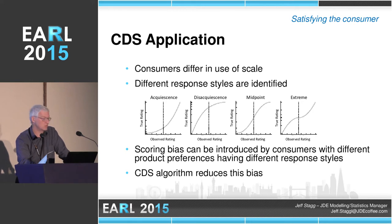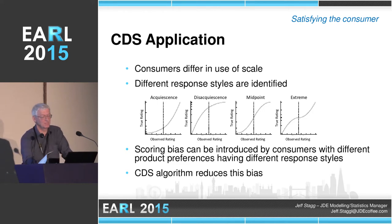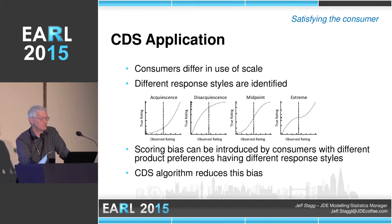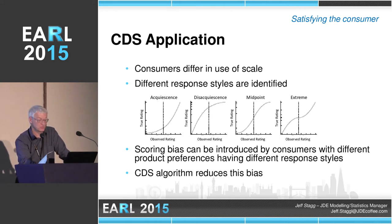Acquiescent are people that are very positive about all the products. Disacquiescent is the reverse. Midpoint is probably a person like me — a scientist who starts in the middle and then works either way. And then you get somebody extreme — I might guess they might be extrovert — a love it or hate it, Marmite type of thing. The interesting thing for us is that we know this exists. The scoring bias introduced by consumers with different preferences can have a consequence in the results and how we interpret them. So what we need to do is try and remove that bias. We're using the CDS algorithm to reduce it — notice I didn't say take it out; I can only reduce it.